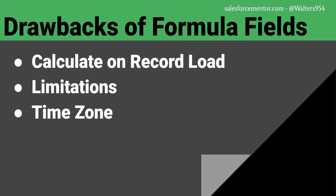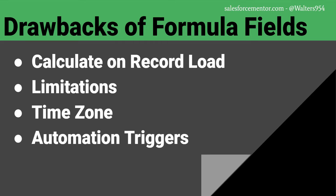Let's get into time zones — the bane of every programmer's existence, and formula fields are no exception. When working with date and time-related formula fields, be careful to work in the correct time zone. Normally everything will be expected to be in GMT and you'll need to offset your formula field to get the correct time zone. Since formula fields are not stored in the database, they cannot easily be used to trigger other automation tools. For example, if a formula field checkbox gets marked true every 25th day of the month, there is no way to trigger a Process Builder to fire based on that formula field checkbox being changed to true.